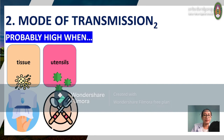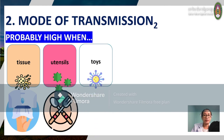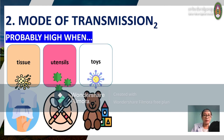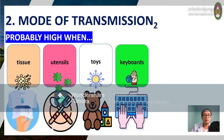There is also a probability of transmission through fomites — objects such as tissue paper touched by someone infected, eating utensils like spoons and forks, toys for kids, and keyboards. When someone infected uses a computer, they have the tendency to transmit the infection to others, or vice versa.